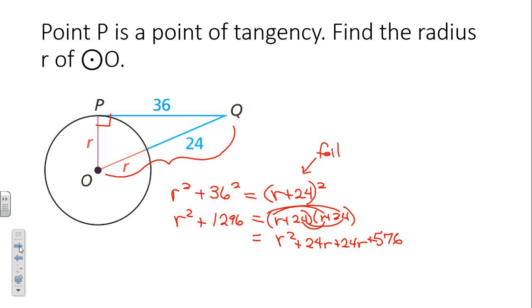These guys go away if we subtract r squared from both sides and now we're down to solving 1296 equals 48r plus 576. Try them, you can do them, they're not that hard. Alright, see you tomorrow.